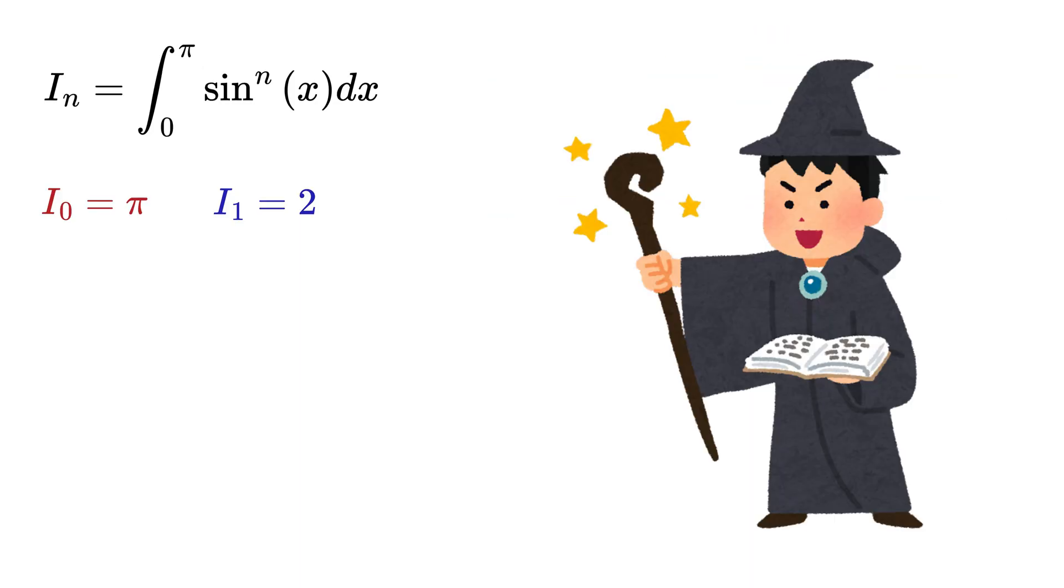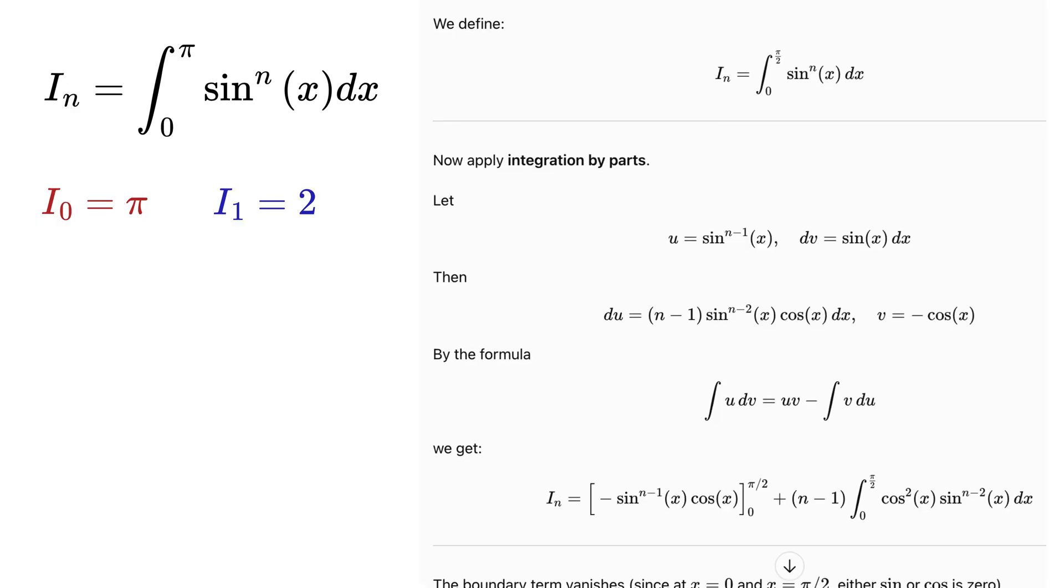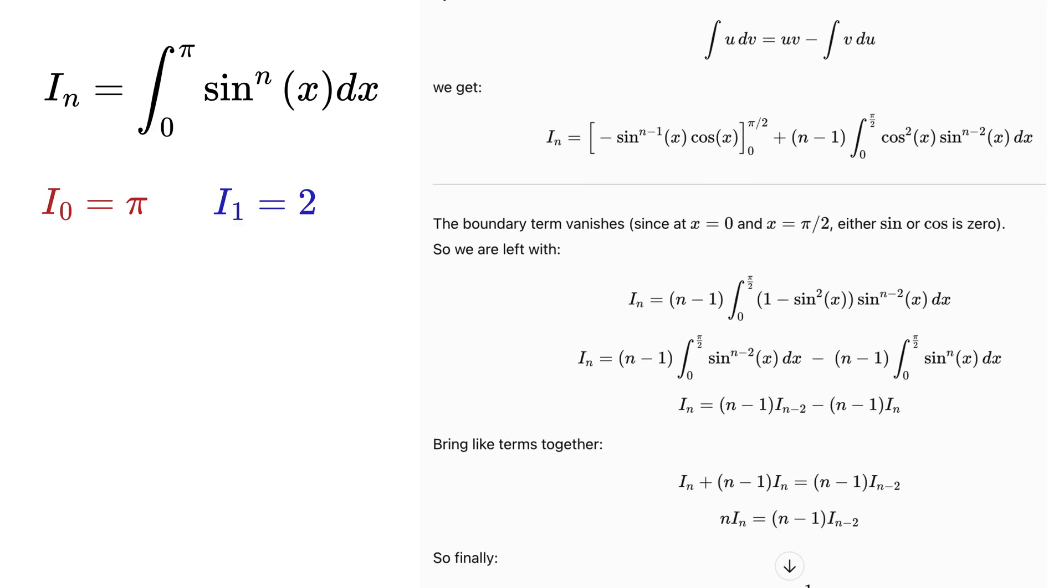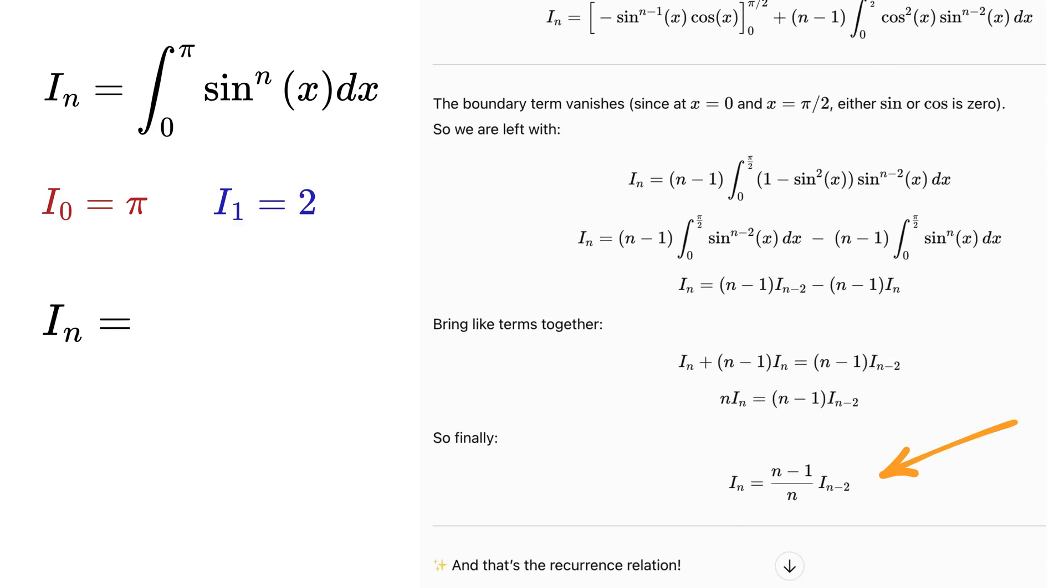Now here comes the actual trick. Now we will use integration by parts. Look at this solution properly. Using it, we can show that I_n is always equal to (n-1) divided by n times I_(n-2). That's the recurrence relation we obtain.